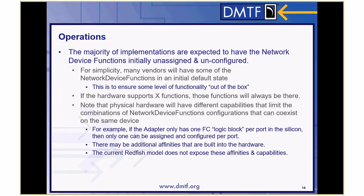The majority of implementations are expected to have the network device functions initially unassigned and unconfigured but all pre-allocated. Most collections you can do a POST to create, but device vendors are going to let you know that all eight network device functions are pre-populated, unconfigured, and unassigned. That means they don't have to support the POST operation — you just go in and PATCH things to configure them. So if hardware supports a certain number of functions, those functions are all going to be there but unconfigured in the initial state.